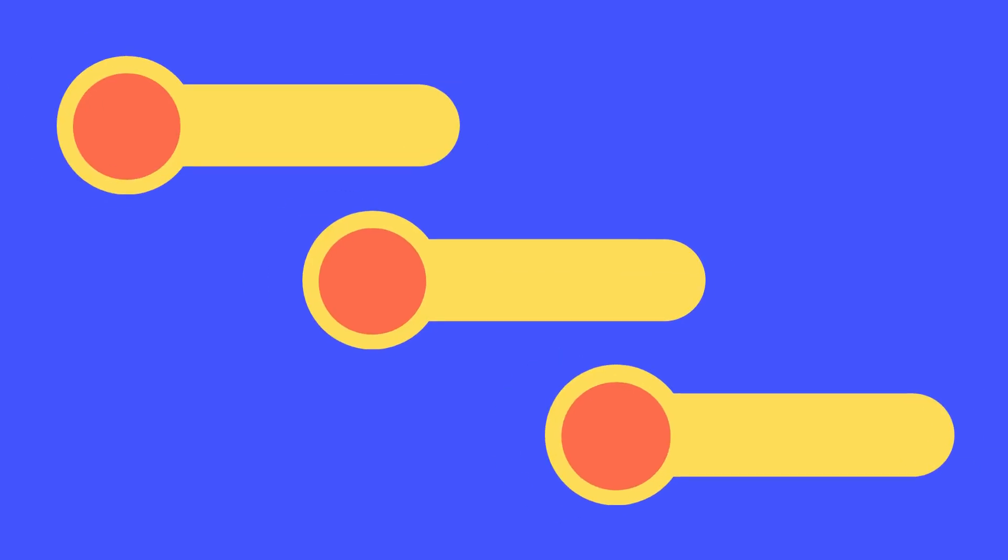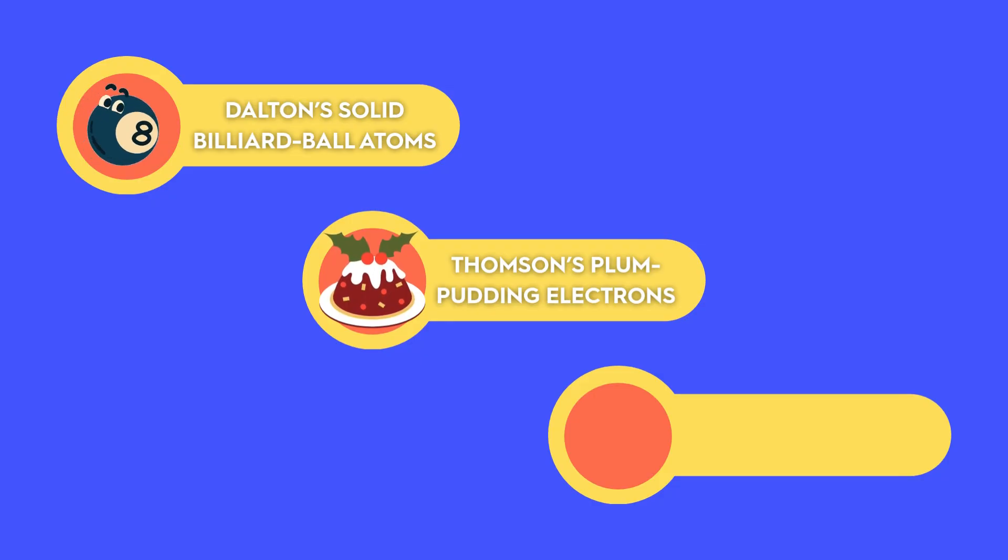So far, we've raced from Dalton's solid billiard ball atoms, through Thomson's plum pudding electrons, to Rutherford's shock-inducing nuclear model, all in under a century.